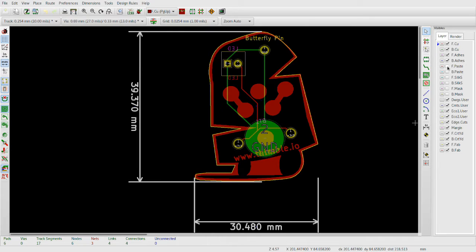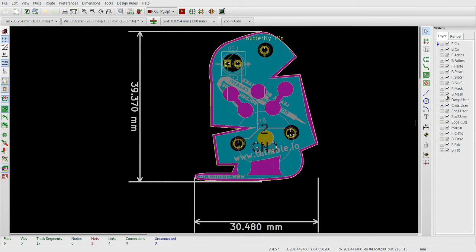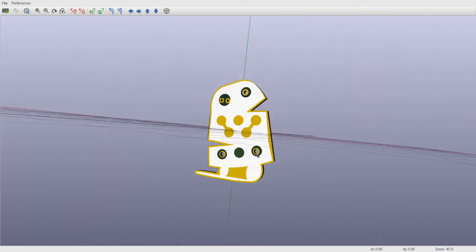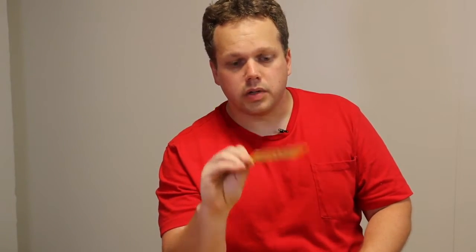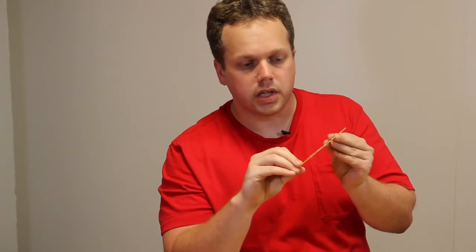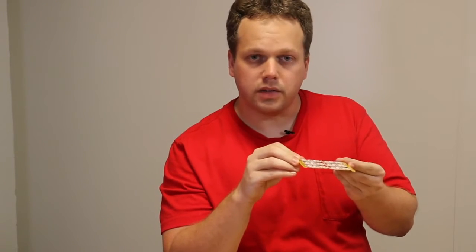When it comes to mass manufacturing, we manufacture PCBs in panels. So a panel looks something like this. You can see we have six boards to a panel and the reason that you manufacture on panels like this is to make manufacturing easier.